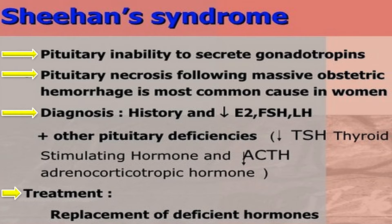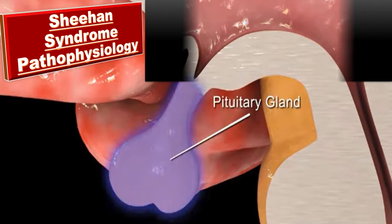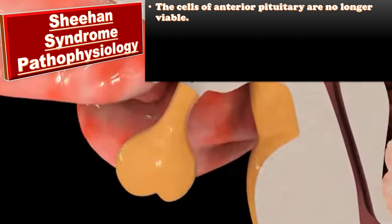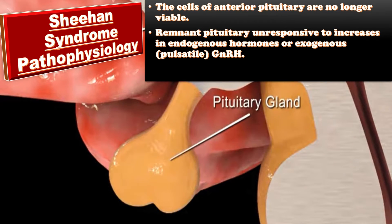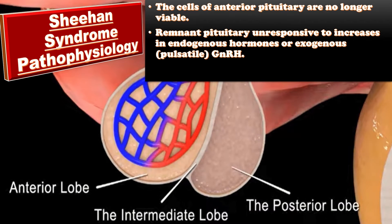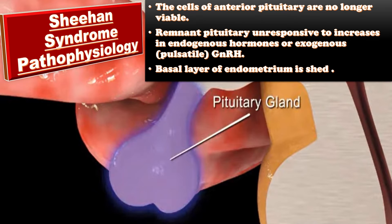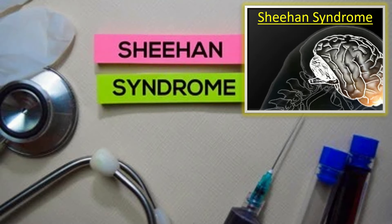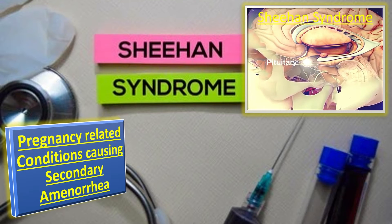The treatment is replacement of deficient hormones. When we study the pathophysiology of Sheehan syndrome in depth, we come to know that the cells of the anterior pituitary responsible for FSH and LH production are no longer viable. Thus, the remnant pituitary will be unresponsive to increase in endogenous hormones or exogenous pulsatile GnRH. The basal layer of endometrium is shed in Sheehan syndrome.